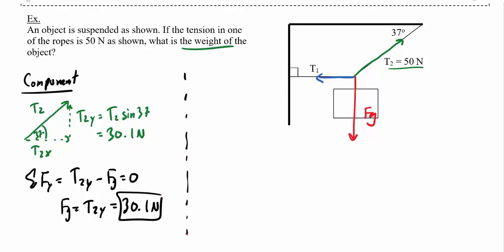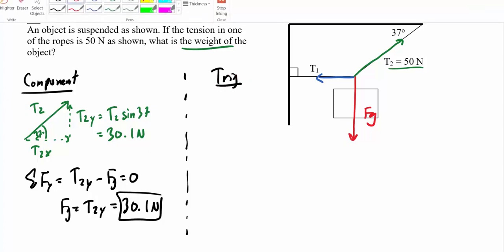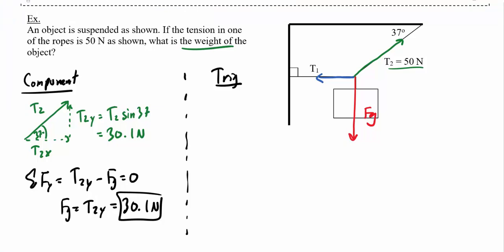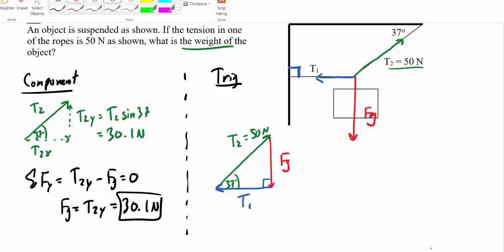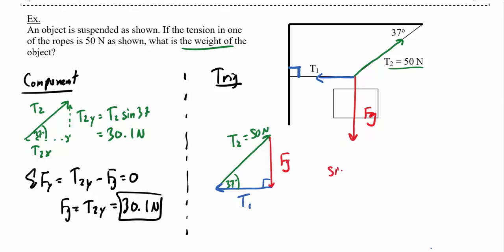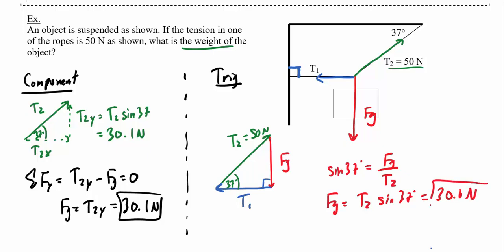By comparison, using the trig method I add up all the forces — it doesn't matter which order for vector addition. Starting with T2, then adding Fg, then adding T1. T1 makes a right angle with the wall, and T2 makes a 37 degree angle with the horizontal. Since T2 is 50 Newtons, sine of 37 degrees equals Fg over T2, so Fg equals T2 times sine 37, giving 30.1 Newtons — exactly the same answer.